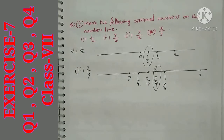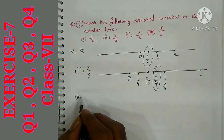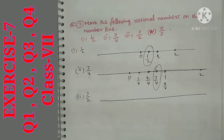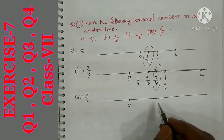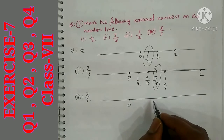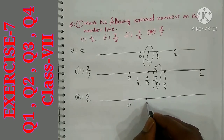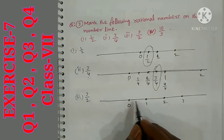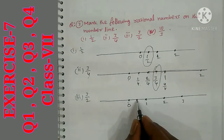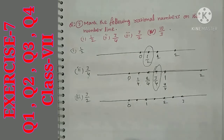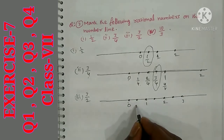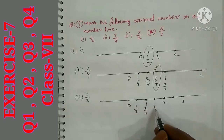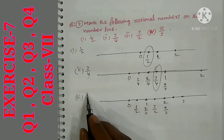For 3 by 2: the denominator is 2, so divide each unit into 2 parts. Mark 0, then 1, 2, 3 on the number line. Each unit is split into 2 parts. 1 by 2, 2 by 2 equals 1, and 3 by 2 is the next point after 1, halfway between 1 and 2.